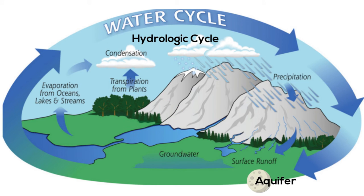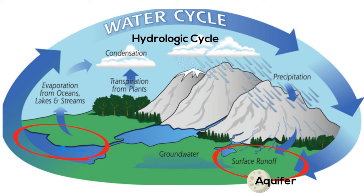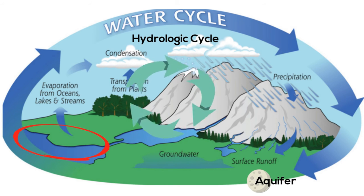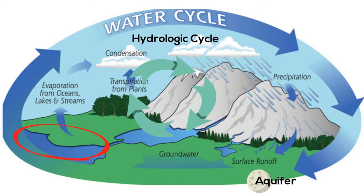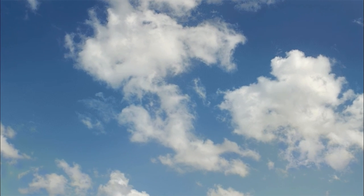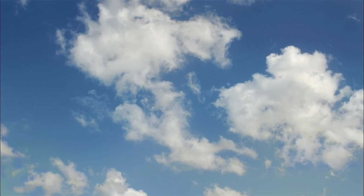Water on the earth's surface that is not absorbed by plants or does not become groundwater becomes surface runoff. This runoff may empty into lakes, rivers, and streams, and is then carried back to the ocean where we began. And there we go — the basics of the water cycle.